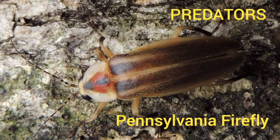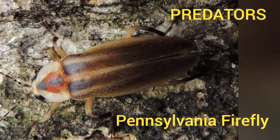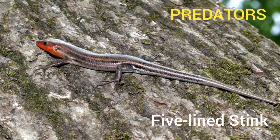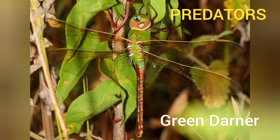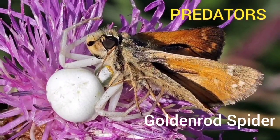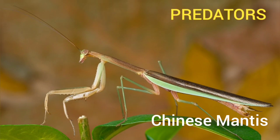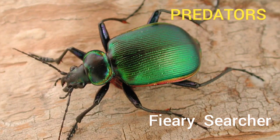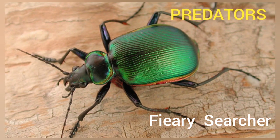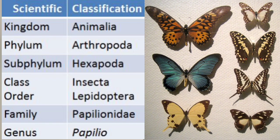Pennsylvania Firefly, Five-Line Stink, Green Downer, Golden Road Spider, Chinese Mantees, and Fury Searcher. It belongs to Family Peplionidae.